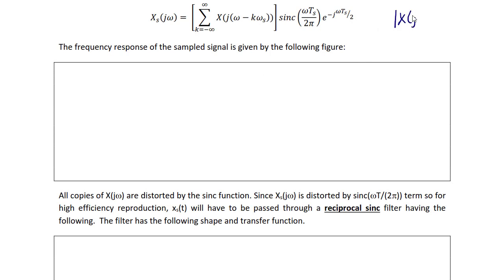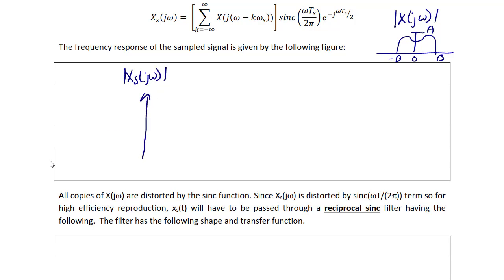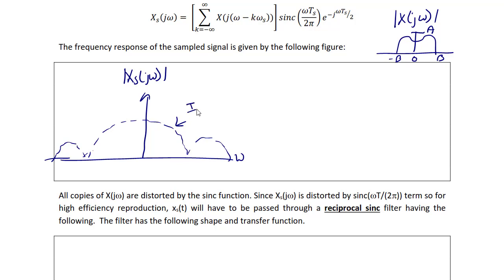Assume the input X(jω) is an arbitrary waveform with amplitude A and bandwidth B. In the sample and hold circuit, the sinc envelope has a peak of T over TS times the magnitude of sinc(ωT / 2π). The zero crossings of this envelope occur at 2π/T, 4π/T on the positive side, and negative 2π/T, negative 4π/T on the negative side.